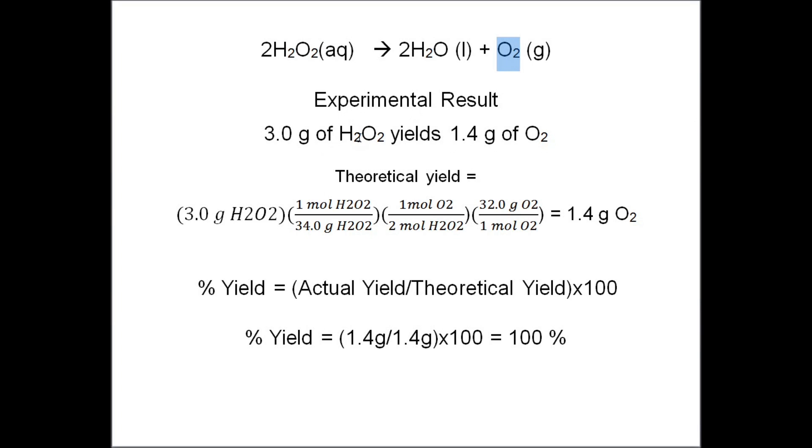The experimental result was that the 3% hydrogen peroxide, 100 milliliters which should have 3 grams of hydrogen peroxide, yielded 1.4 grams of oxygen. So this is my experimental result. The container after I released the oxygen weighed 1.4 grams less than it did initially.